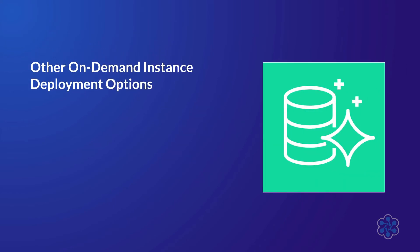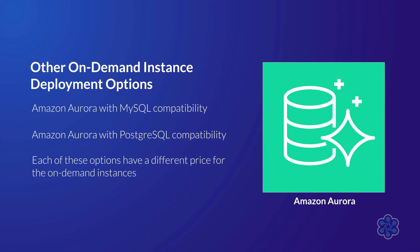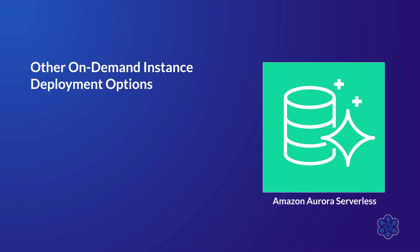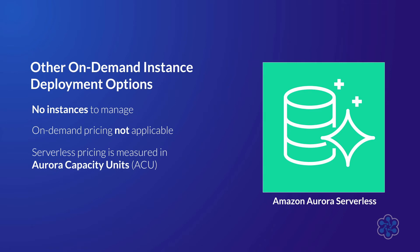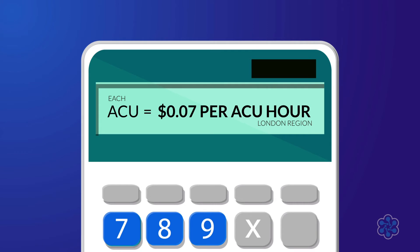As well as both single-AZ and multi-AZ, some of the database engines offer alternative options. For Amazon Aurora, when selecting it as your database engine, you can either deploy it with Amazon Aurora with MySQL compatibility or Amazon Aurora with PostgreSQL compatibility, and each of these options have a different price for the on-demand instances. You also have the option to use Amazon Aurora Serverless, which ultimately means there are no instances to manage, so on-demand pricing is not applicable. Serverless pricing is measured in Aurora Capacity Units (ACUs). Each ACU consists of 2GB of memory in addition to any associated CPU and networking requirements. As an example, each ACU within the London region is charged at $0.07 per ACU hour.